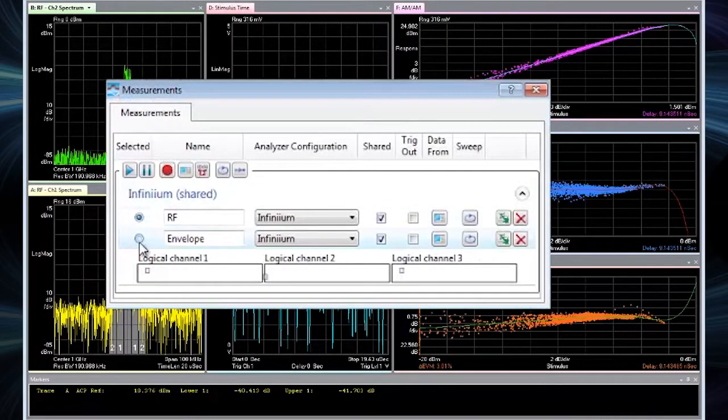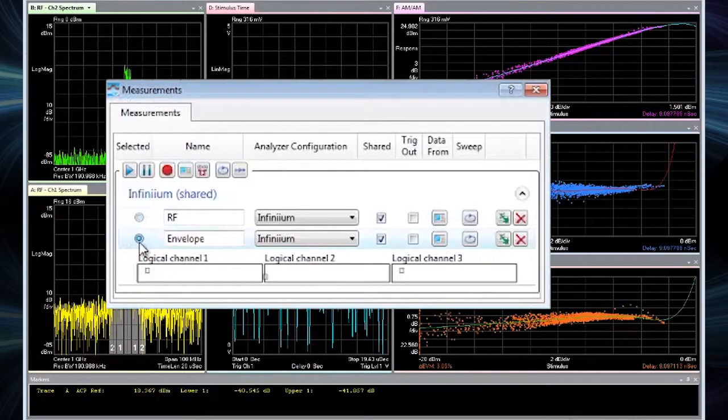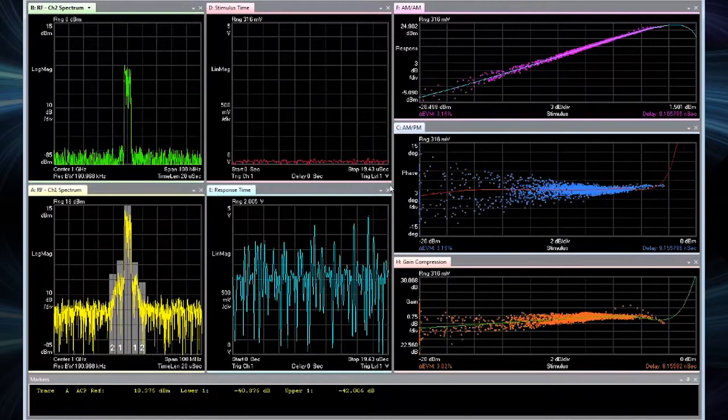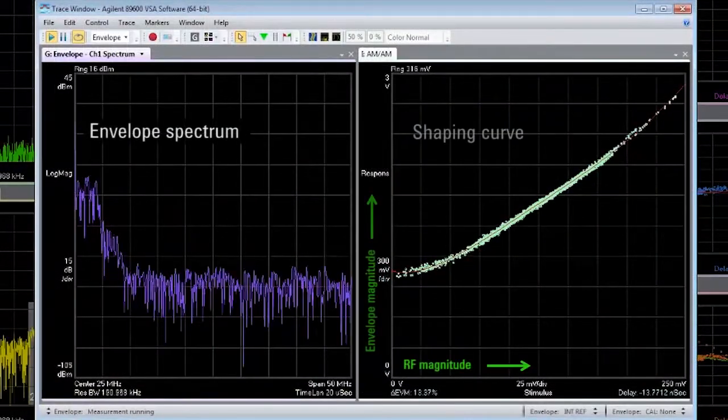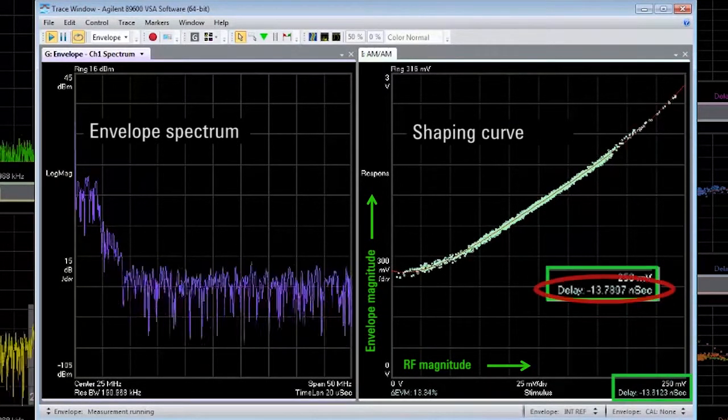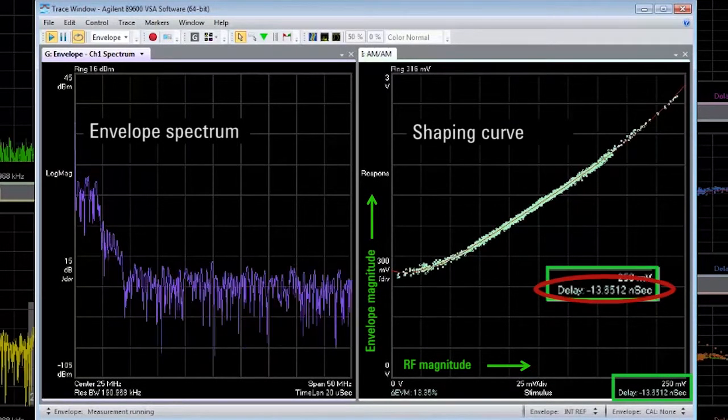Adding another measurement to the 89600 VSA software lets us look at the envelope signal simultaneously and verify the shaping that's been applied to the envelope. The VSA software also calculates the timing delay between the RF and envelope signals.